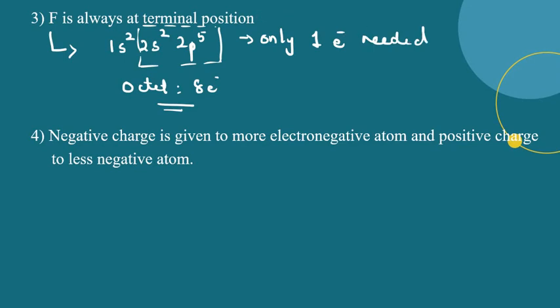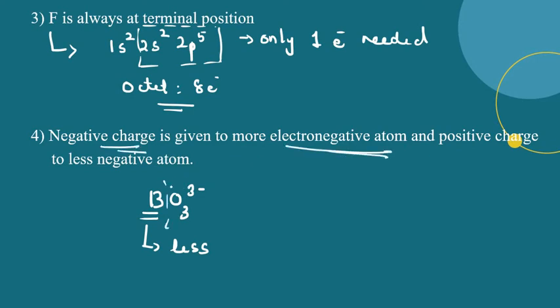Fluorine also appears at terminal positions and forms a single bond. Fluorine's configuration is atomic number 9: 1s2, 2s2, 2p5. Regarding formal charge: negative charge is given to the more electronegative atom and positive charge is given to the less electronegative atom.